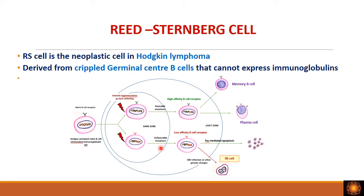If mutations are unfavorable, these B cells express low-affinity B cell receptors or don't express antibodies at all. These are called crippled germinal center B cells, which normally undergo apoptosis. However, if this cell is infected by the Epstein-Barr virus, activation of nuclear factor kappa-beta prevents apoptosis, and with further mutations this cell transforms into the Reed-Sternberg cell.